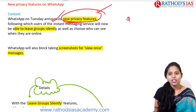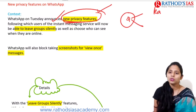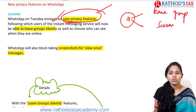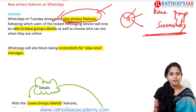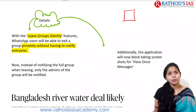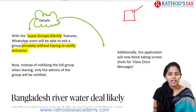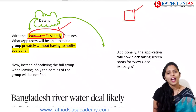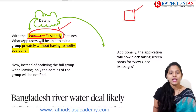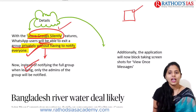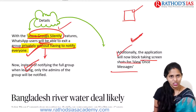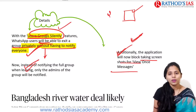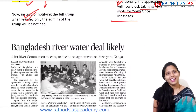Two important new privacy features from WhatsApp: First, 'Leave Group Silently' — users can exit a group privately without notifying everyone; only the admin is notified. Second, WhatsApp will also block taking screenshots for 'View Once' messages. These are two important steps taken by WhatsApp to ensure user privacy.